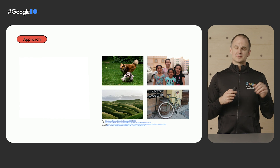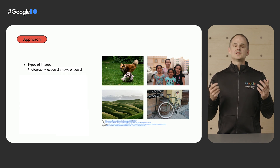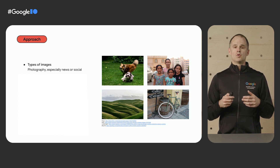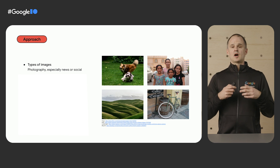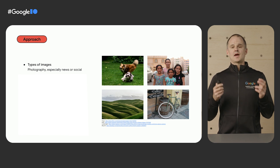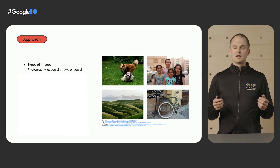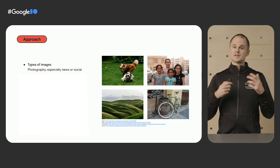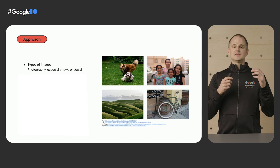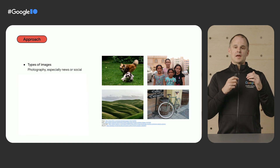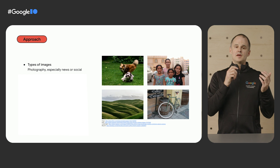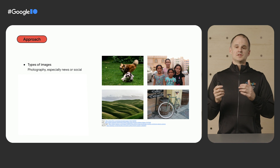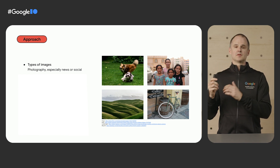Starting with the type of images, we decided on photographs — in particular, photos you might find on news sites or social media sites. This covered some common use cases, and we also had access to large, diverse training sets. Plus, in some cases a user could verify the model's result by comparing a human-written caption with an automated machine-generated caption.